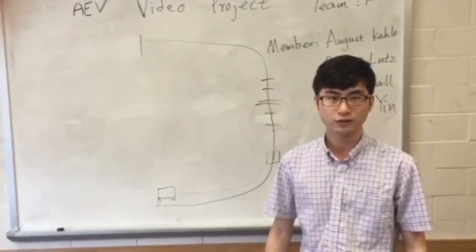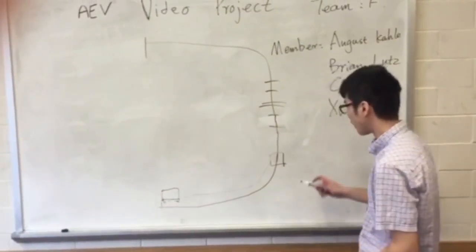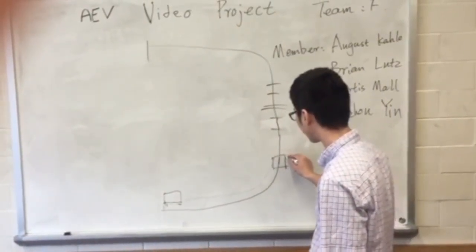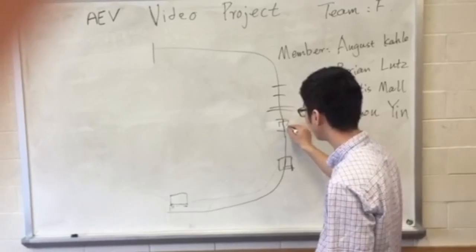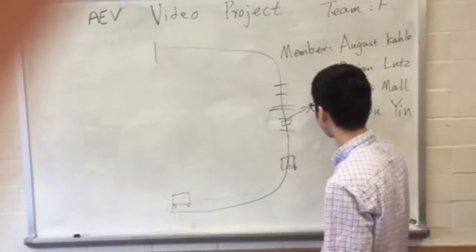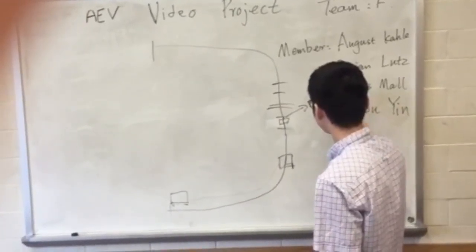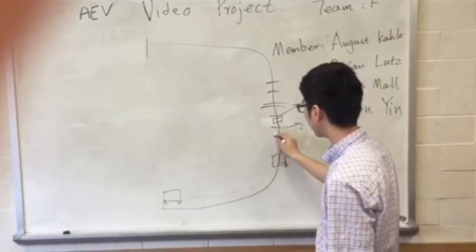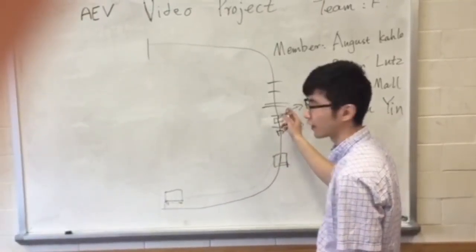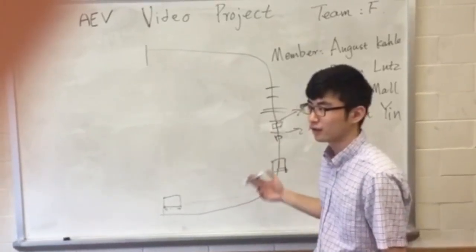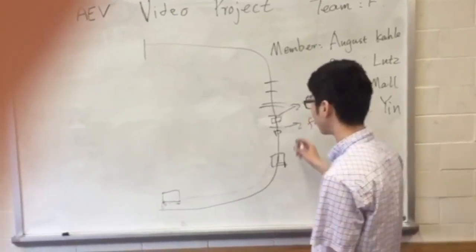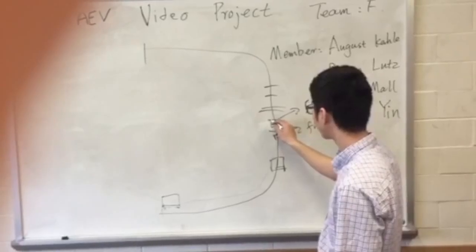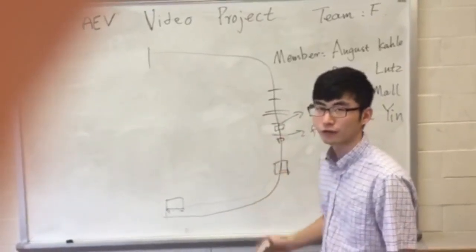So next, we should make the AEV exactly stop here, which is between the second sensor and the first sensor. If we didn't pass our first sensor, then the gate will not detect our AEV coming. If our AEV passed the second sensor, then the gate will never open.